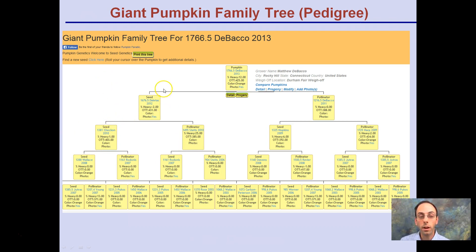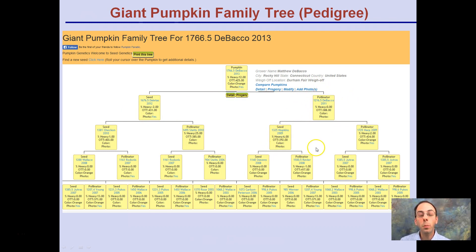With pumpkins you need to plant a seed in the ground and you need a pollinator, so you develop the pollen from somewhere. This is the lineage of the cross that I made with the pollinating plant.